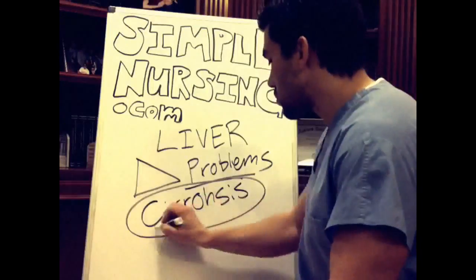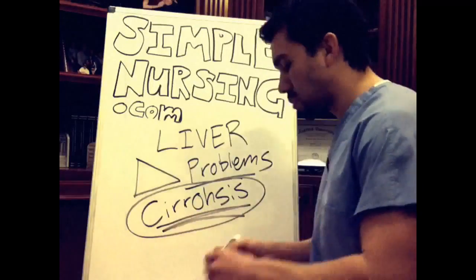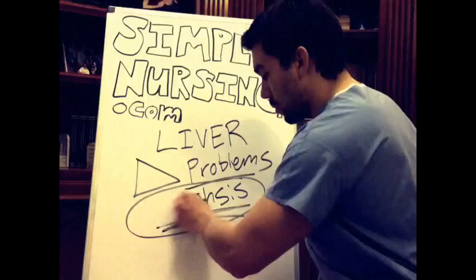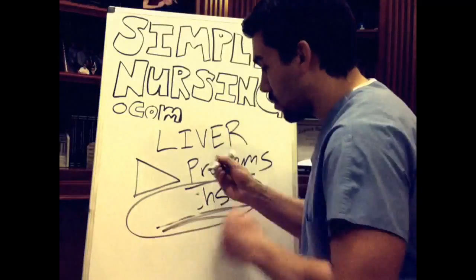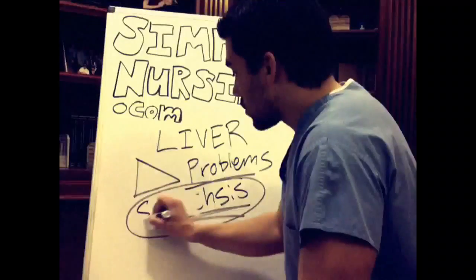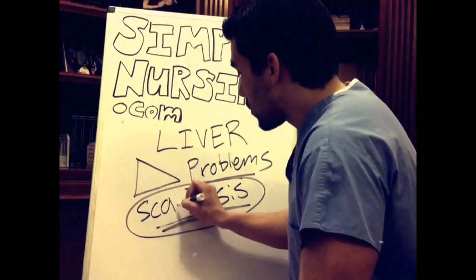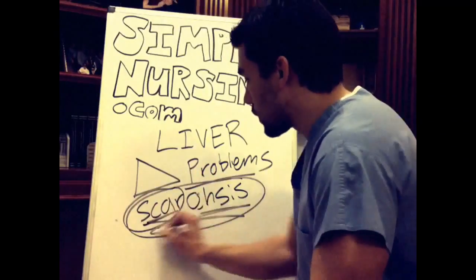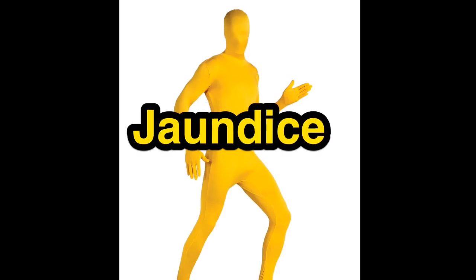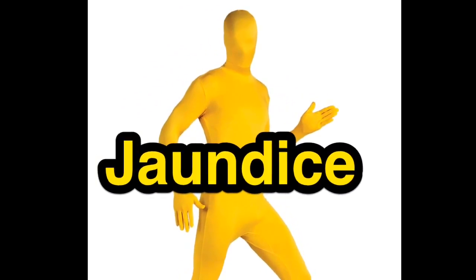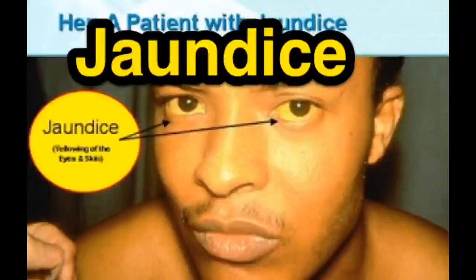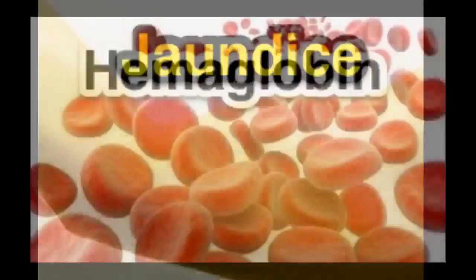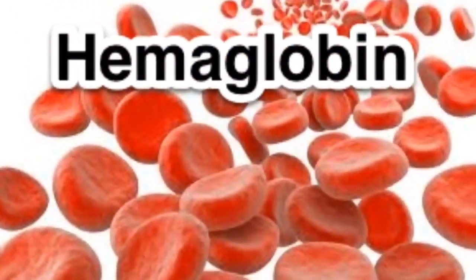It's beginning to look a lot like cirrhosis — jaundice of the skin from the hyperbilirubinemia, waste products of hemoglobin.